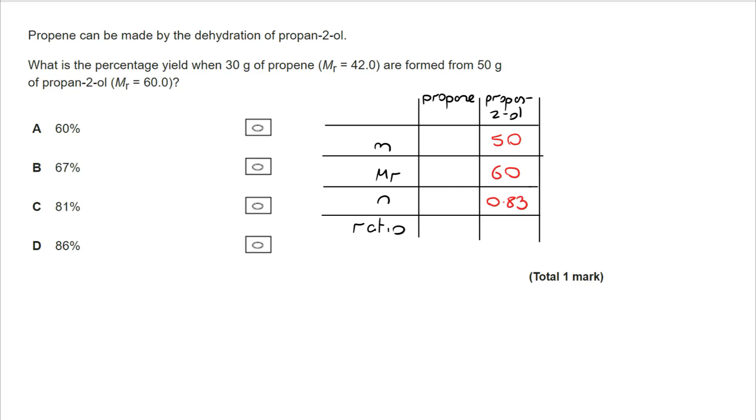You could write the equation out, but hopefully you would recognize that one mole of propene makes one mole of propan-2-ol. So there's a one-to-one ratio. 0.83 moles will require 0.83 moles of propene to make it. I've been given the MR, so I can calculate the M, which is 35 grams. We should theoretically make 35 grams, but we only make 30. So we do the percentage yield: 30 divided by 35, multiplied by 100, equals 85.6%. The correct answer is D, 86%.